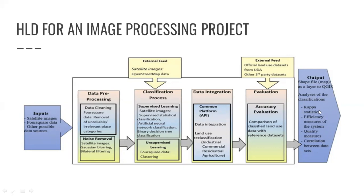You will analyze the classification with the help of capacity statistics, efficiency measures, statistical quality measures, and correlation between databases. External feeds include satellite images, open ship data, and official land use data. So this overall system diagram is the HLD for an image processing project — covering input stage, data preprocessing stage, classification, data integration, and evaluation output. You can also consider this for any artificial intelligence, computer vision-based project.